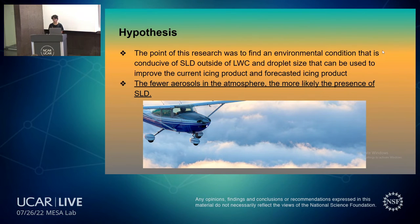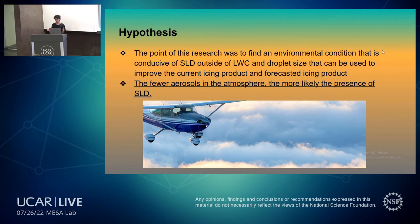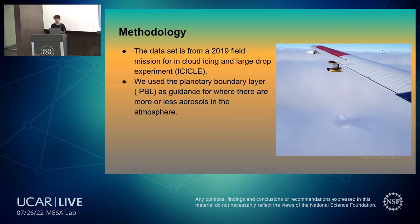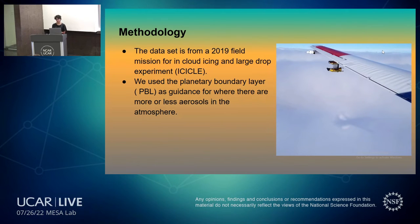The point of this research was to find an environmental condition conducive to SLD outside of liquid water content and droplet concentration, which is currently the main thing used to forecast it. Unfortunately, models don't forecast this very well because water changes so dramatically across small spatial scales. Our hypothesis was that we could find the aerosol concentration and base forecasts off of that — the fewer the aerosols in the atmosphere, the more likely the presence of SLD. We used the planetary boundary layer as a dividing line between higher and lower aerosol regions, and compared this to a 2019 field campaign over the Midwest — the In-Cloud Icing and Large-Drop Experiment — hoping to see more SLD above the planetary boundary layer than below it.